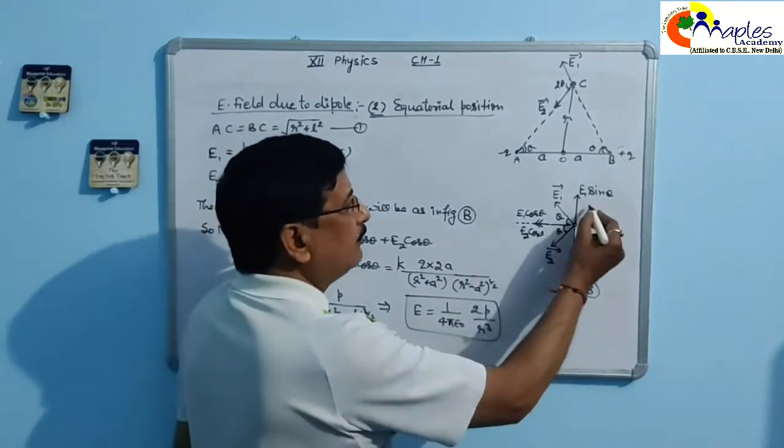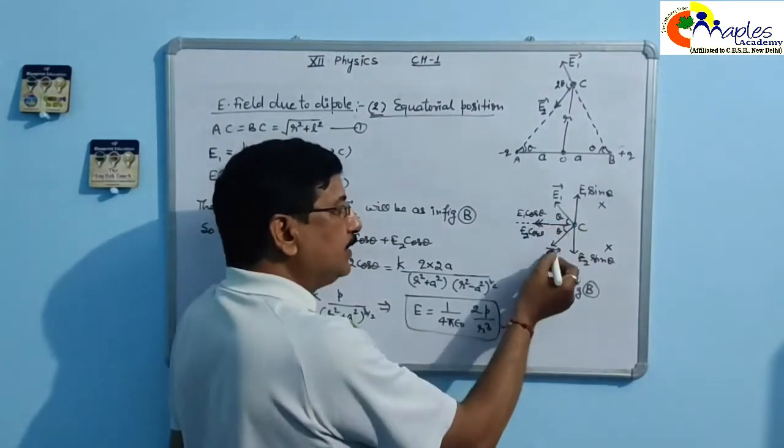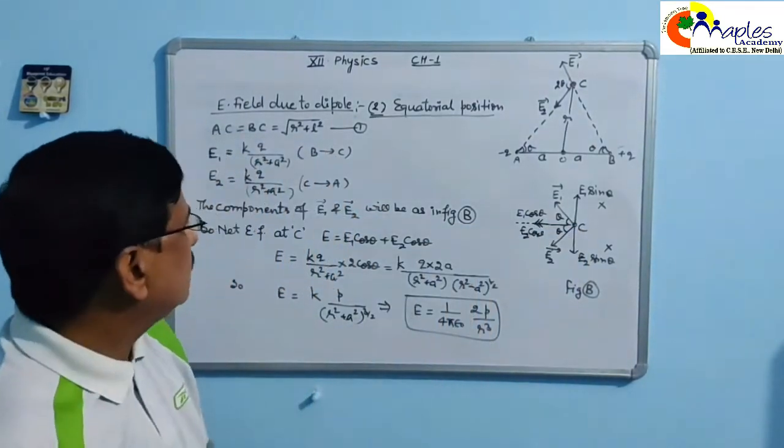The component is like E1 sin theta, E2 sin theta cancels. E1 cos theta, E2 cos theta in the same direction, so add up.